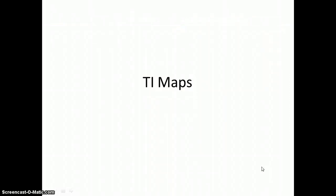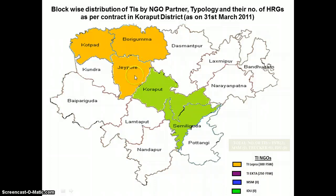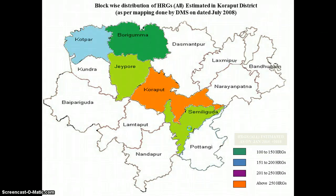We will now see the targeted intervention maps. This is a map depicting the TI intervention areas. There are two TI NGOs: TI Lepra and TI Ekta. TI Lepra is working in Koraput, Boriguma, and Jayapur. TI Ekta is working in Koraput and Simdiguda mandals. We will now see the spread of the HRGs in this system.